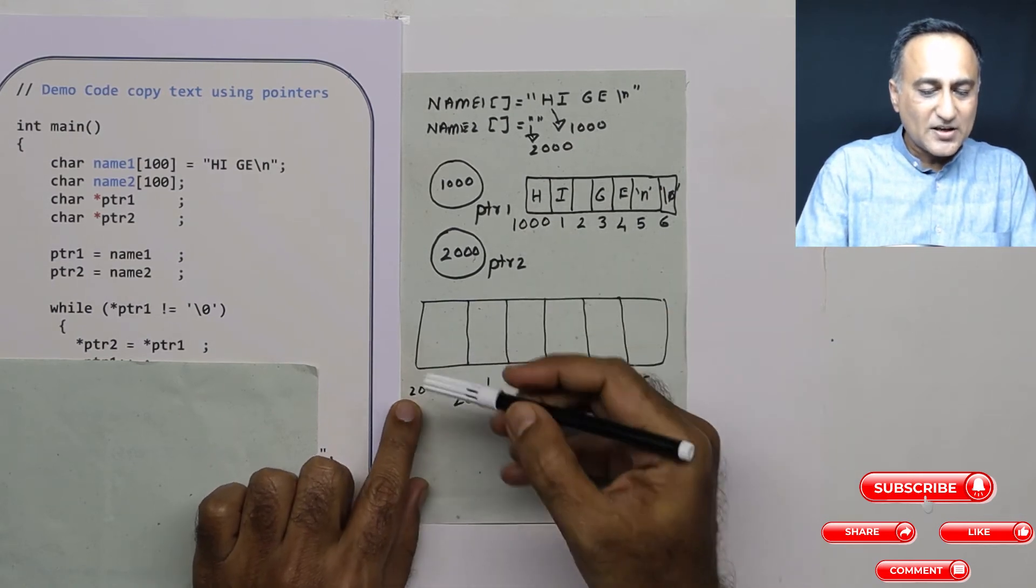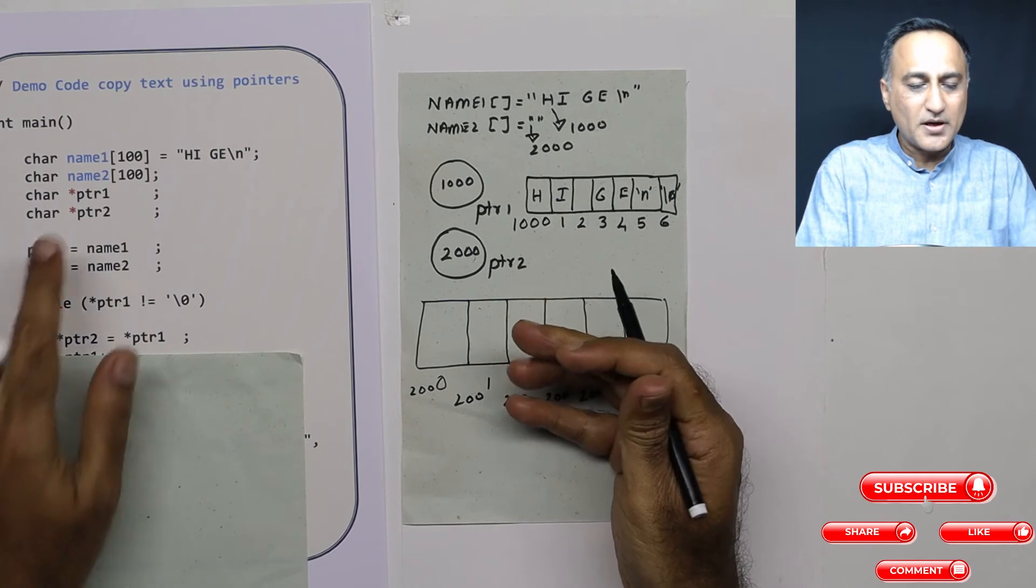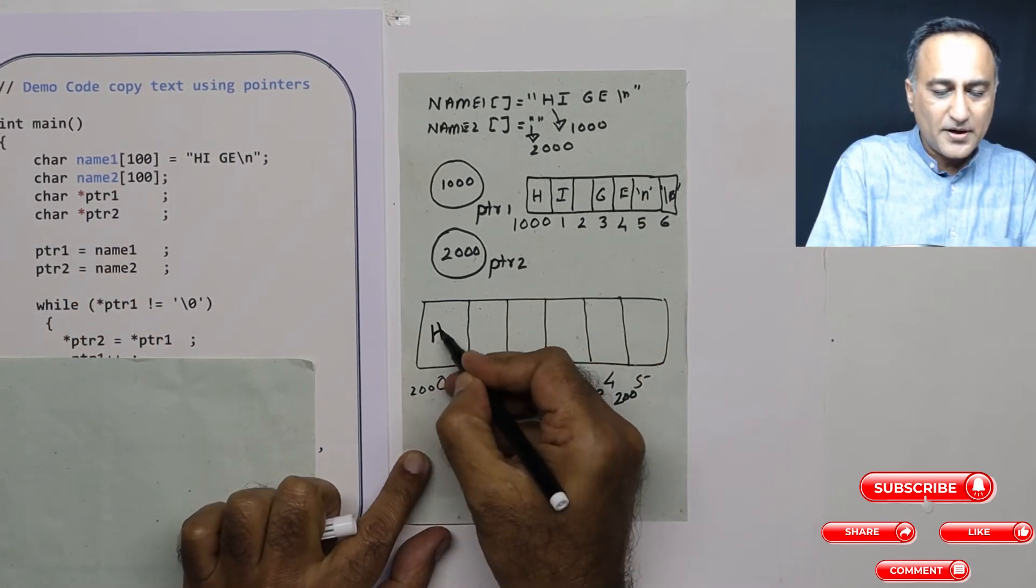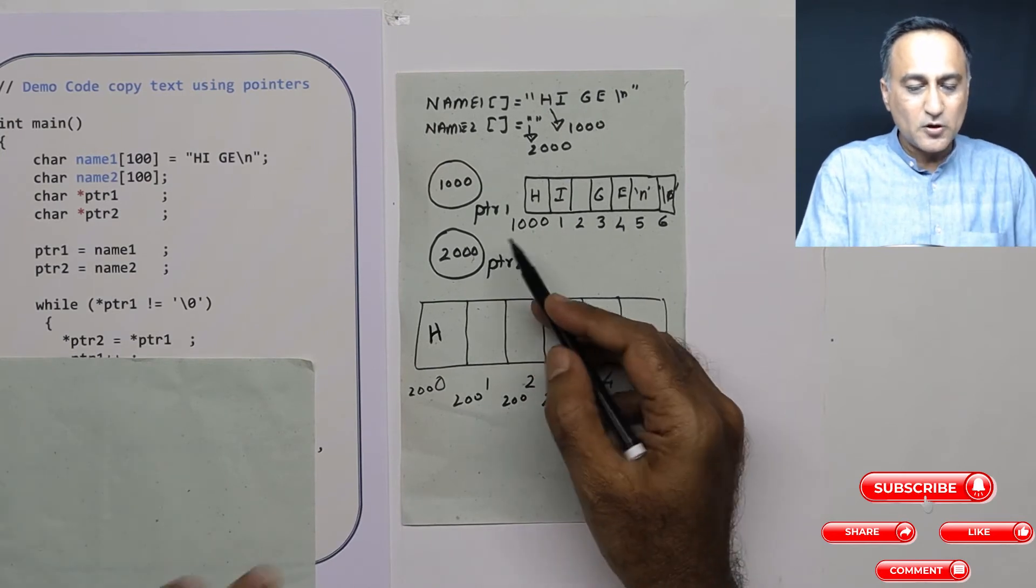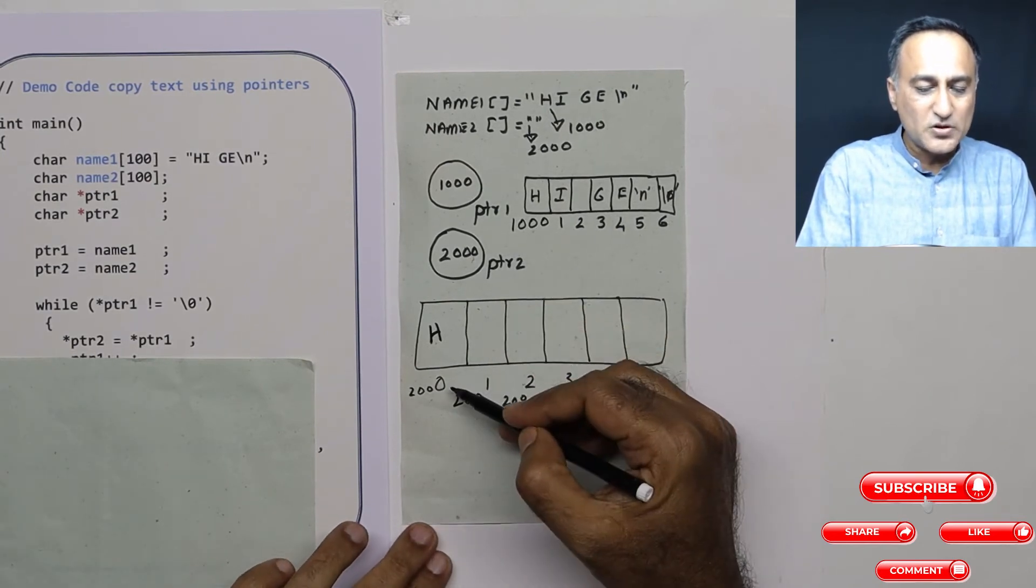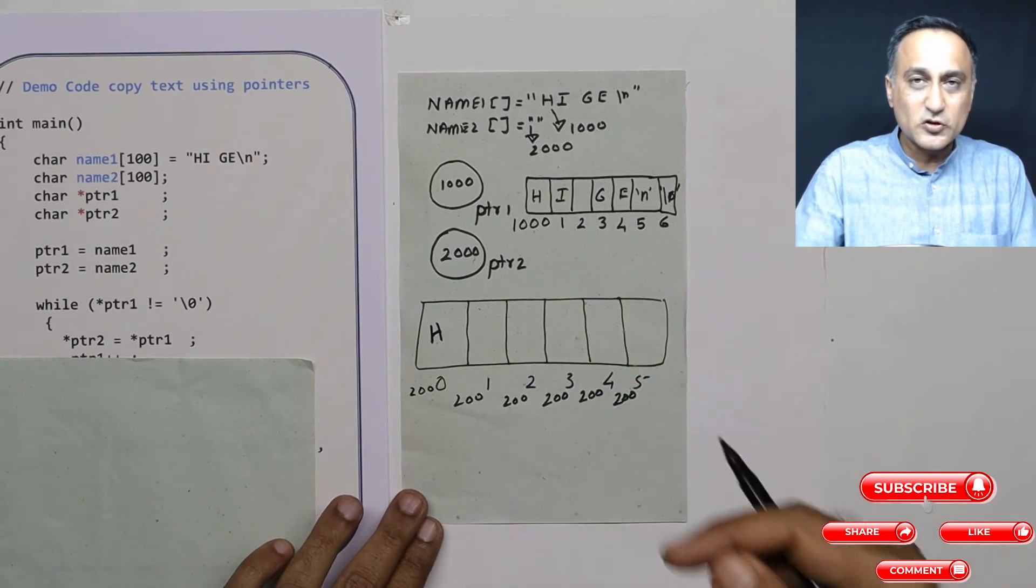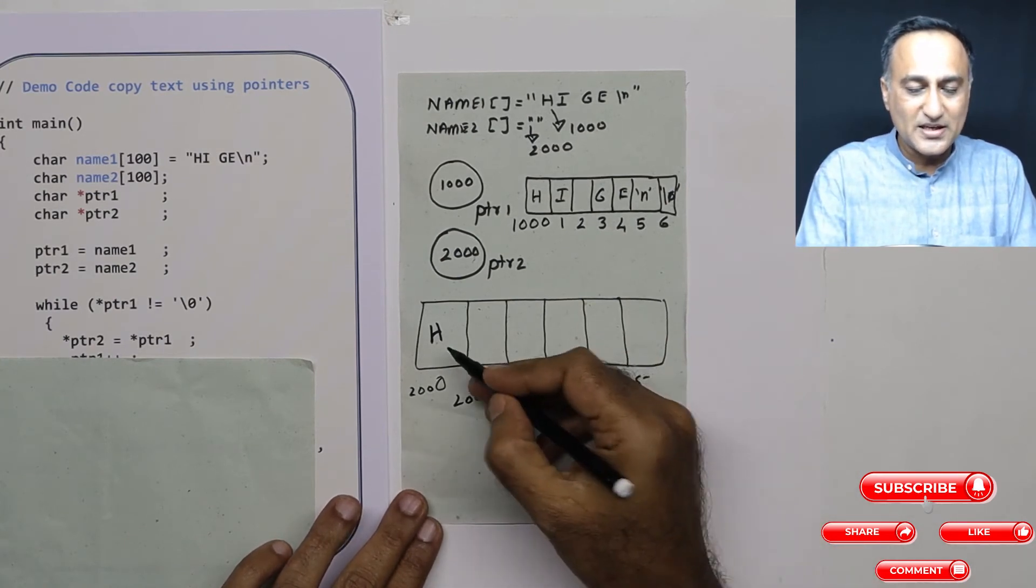So this particular h is copied into location 2000. That's what this statement is doing, because ptr1 is at 1000, ptr2 is at 2000. Star refers to value at that particular address. h is copied here.